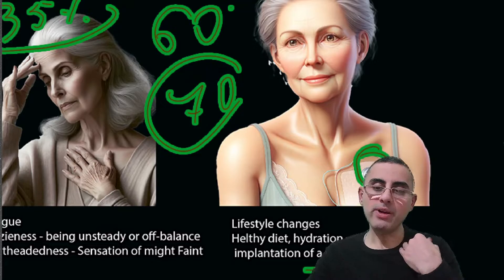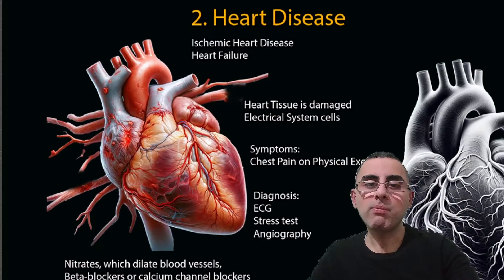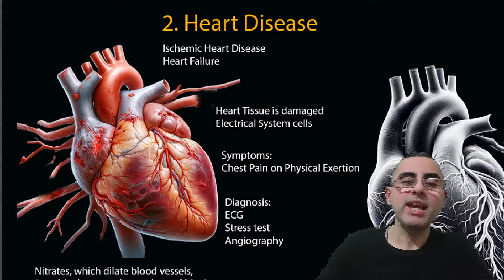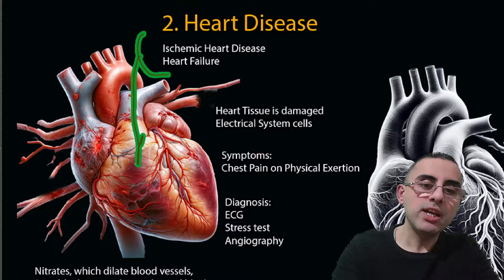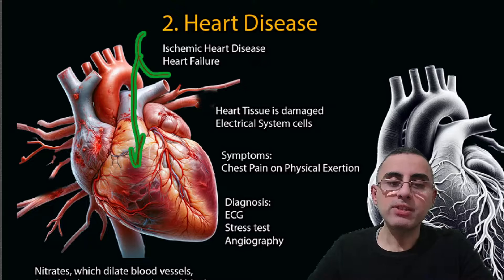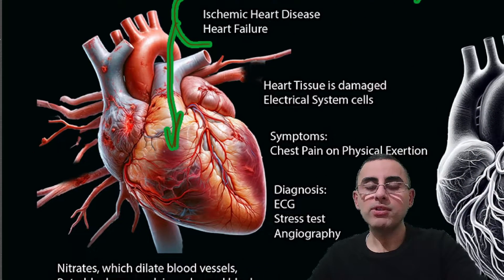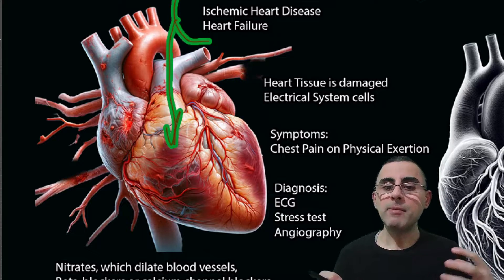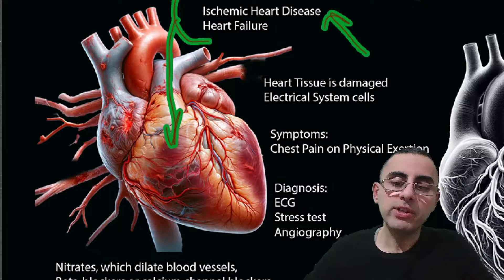The pacemaker is implanted under the skin at the left side, below the collarbone. The second most common cause of bradycardia is heart disease, especially ischemic heart disease and heart failure. In both conditions, there is damage to the heart tissue, which also damages the electrical system of the heart, causing bradycardia. The most common symptom of ischemic heart disease is chest pain on physical exertion, which is called angina.